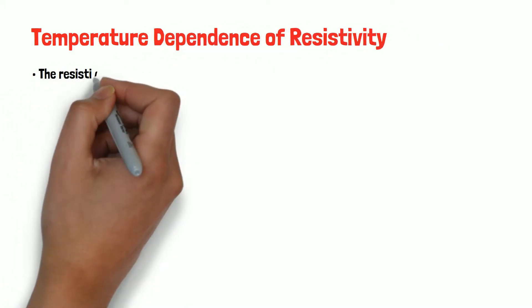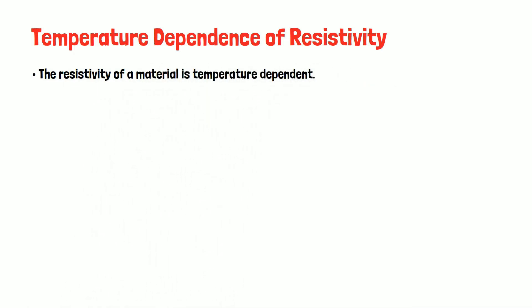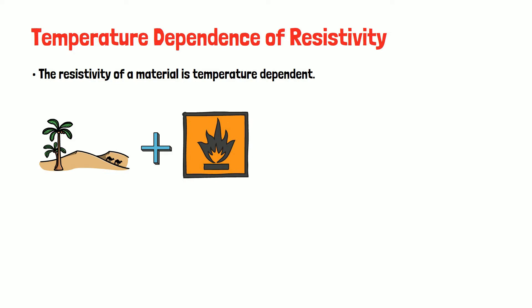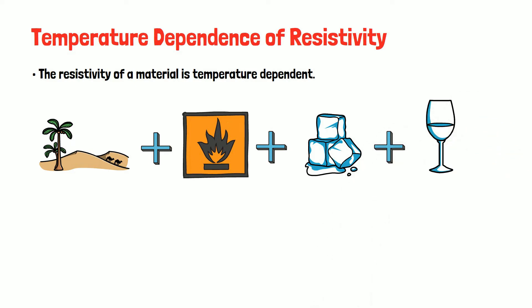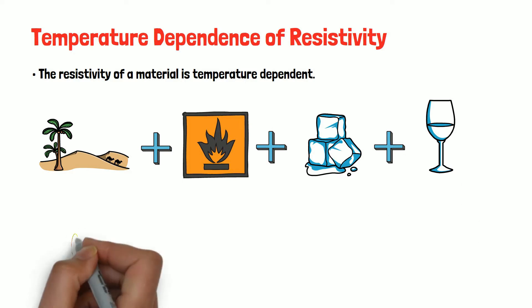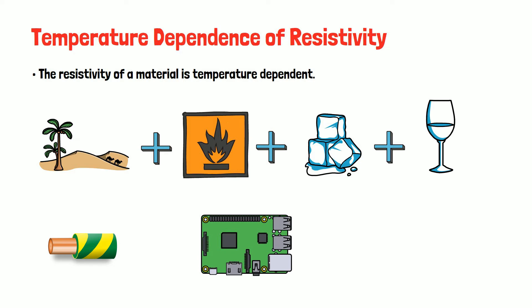The temperature dependence of resistivity: the resistivity of a material is temperature dependent. For example, if sand is heated at extreme temperature, it loses its crystalline structure, and as it cools it forms an entirely different structure called glass. The temperature dependence of resistivity is different for conductors, semiconductors, and insulators.